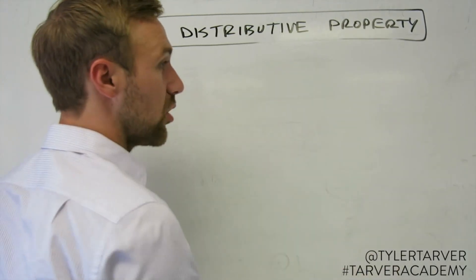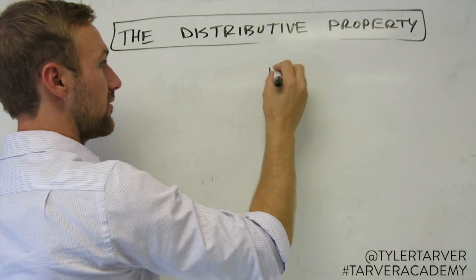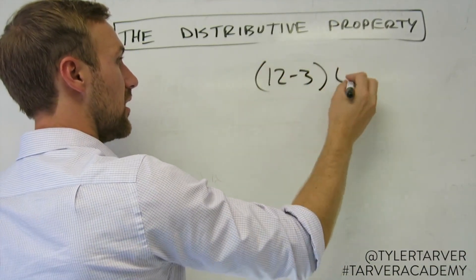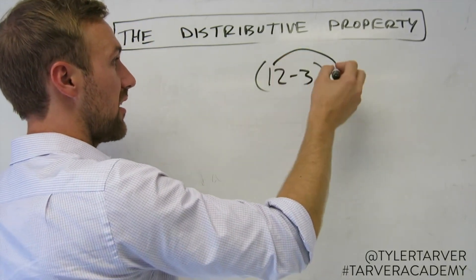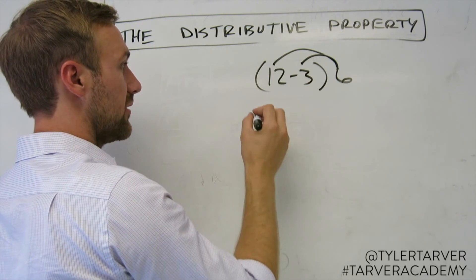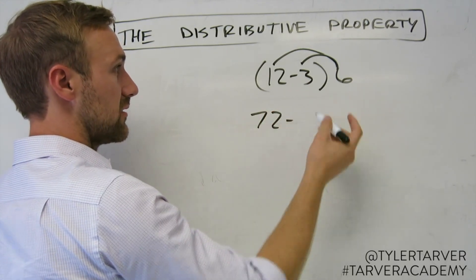The distributive property also works going backwards. So say you have 12 minus 3 and you've got a 6 there. Same thing, except if you're just coming back this way. Multiply there, multiply there. So that would be 72 minus 18.